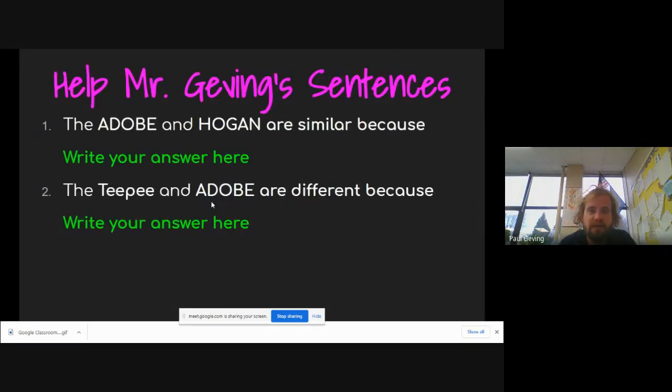You go to the next one and it will bring you through. I'm going to fast forward all the way down to the last part of writing. You're going to help me to fix these sentences. Says the adobe and the Hogan are similar because, well you know why they're similar because you just did an observation activity checking them out. The tipi and the adobe are different because, well you'll also know because you just finished checking them out. You can write your answer right on the slide here. You don't have to do five sentences, this one we're just going to do one finished sentence on each of these.